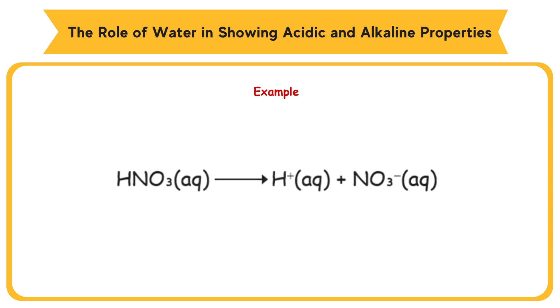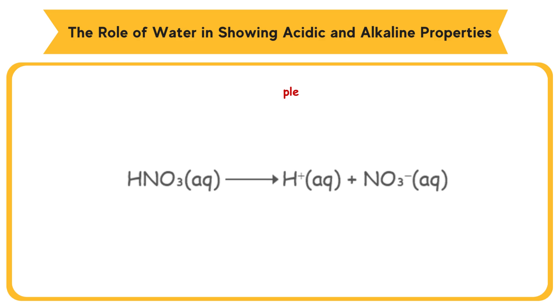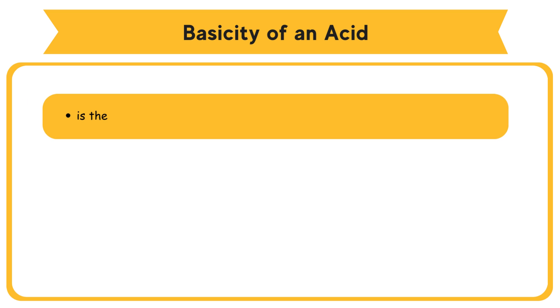Example: Nitric acid becomes hydrogen ion and nitrate ion. Basicity of an acid is the number of ionizable hydrogen atoms per acid molecule.